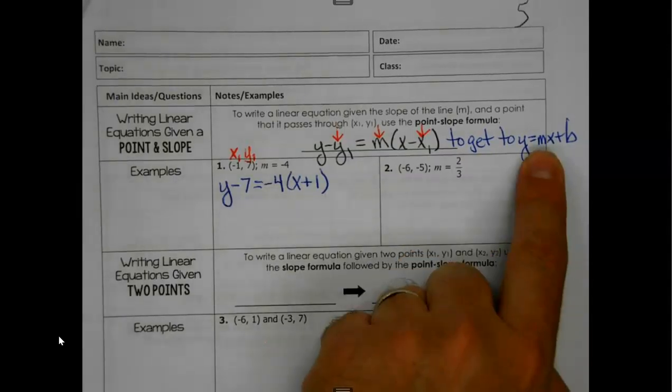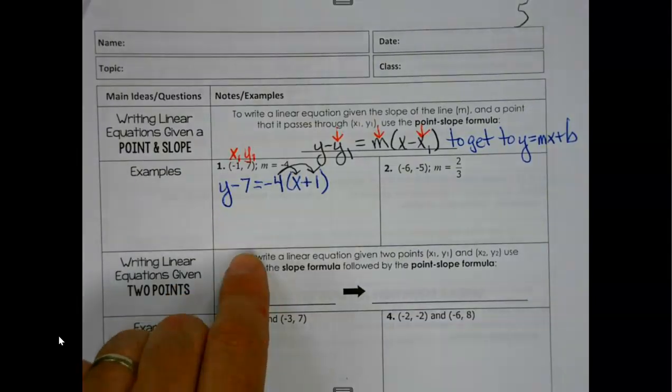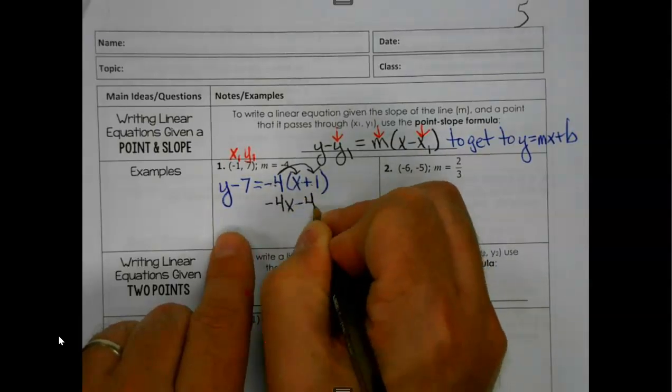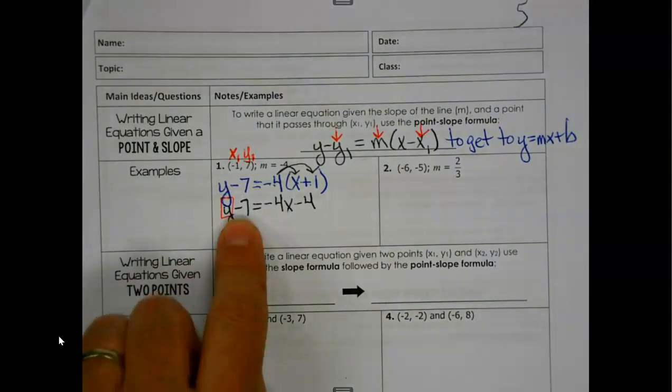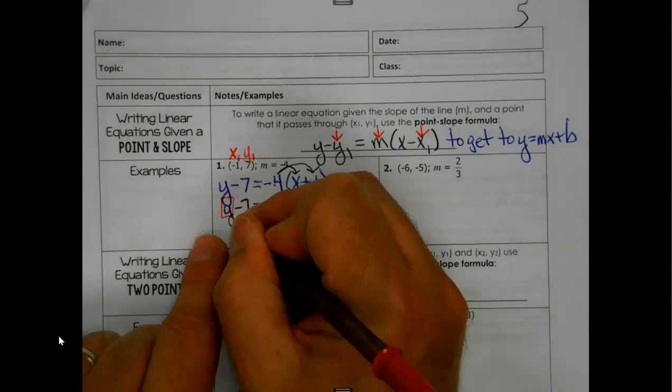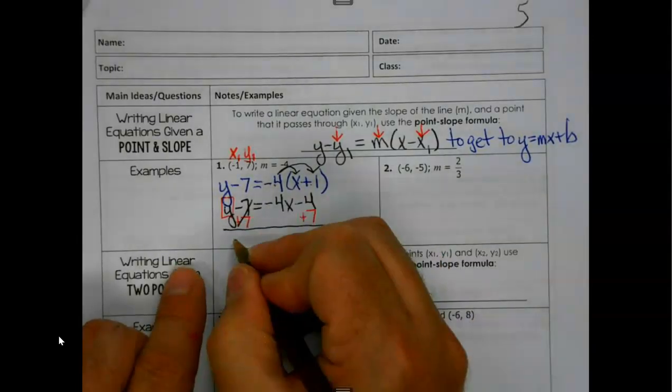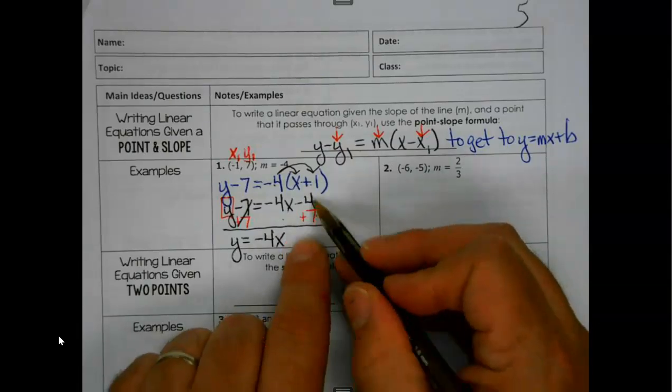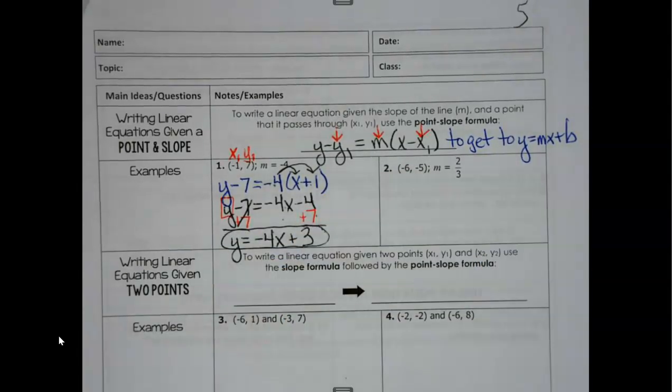But the goal is to get it to y equals. So whenever we have parentheses, my next job is to distribute that through. Make sure you multiply the negative 4 to both the x and to the 1. And now we're close to the end. Because if the goal is to get to y equals, that's the only thing keeping me from being in y equals right now. So if we add the 7, and again, notice, why'd you put the 7 over there and not here? These are the plain numbers. I can't add 7 to negative 4x. They're not alike.